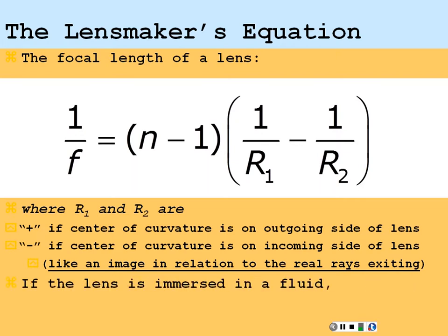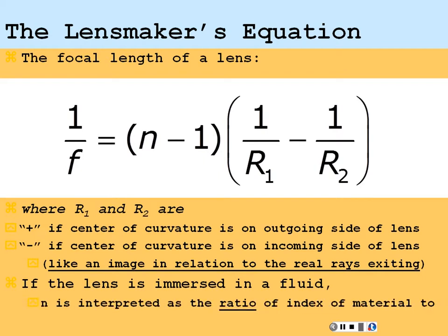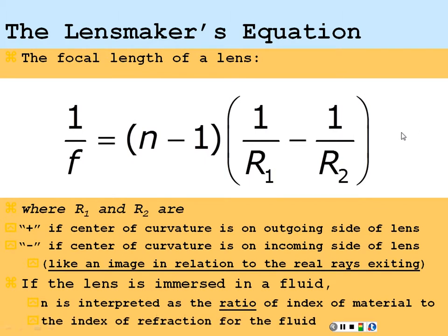If the lens is immersed in fluid, N becomes the ratio of the lens material's index to the fluid's index. If the fluid were air (index 1), it's just the material index over 1. If the fluid were water (1.33), it would be the index of the glass — say 1.5 — over 1.33, which would reduce the effective N value by the index of the fluid.